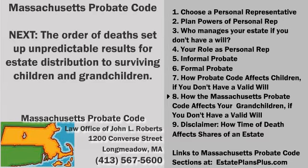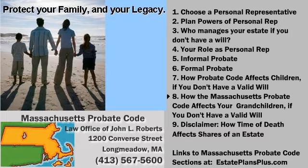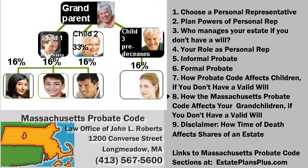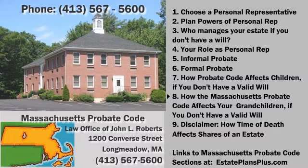In our next videos, we'll see how the order of deaths in the family sets up unpredictable results for the survivors. Provide your own specific instructions in a will or trust to avoid the probate code lottery that changes the values of shares that pass to grandchildren. And if you are the personal representative for an estate that is not covered by a will, we can explain how the law has determined the shares of the estate.